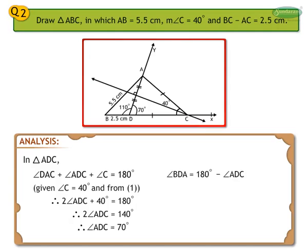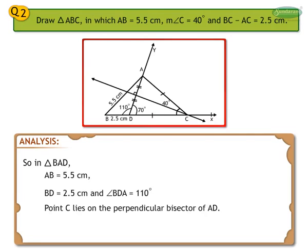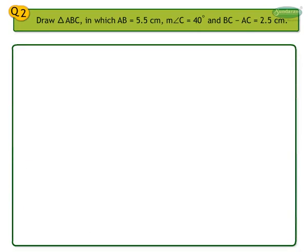Angle BDA and angle ADC form a linear pair. We get angle BDA equals 180 degrees minus angle ADC. Therefore, angle BDA equals 180 degrees minus 70 degrees, which equals 110 degrees. So in triangle BDA, AB equals 5.5 cm, BD equals 2.5 cm, and angle BDA equals 110 degrees. Point C lies on the perpendicular bisector of AD. In this way, we get triangle ABC, the required triangle. Let us see the steps of construction.